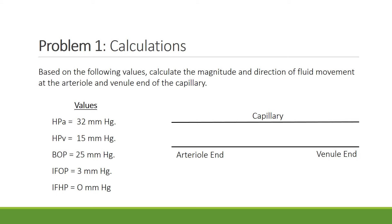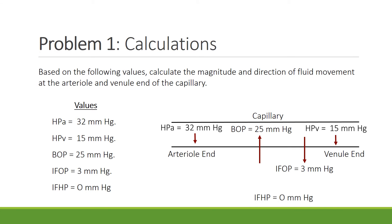See if you can place arrows in this capillary with the given values — the answers are on the next slide. At the arterial end, there's a hydrostatic pressure (HPA) of 32 mmHg, pushing outward. The HPV is the hydrostatic pressure at the venule end, also pushing outward. BOP is 25 mmHg, pulling inward. IFOP is 3 mmHg, also a pulling pressure. IFHP is interstitial fluid hydrostatic pressure and equals zero.